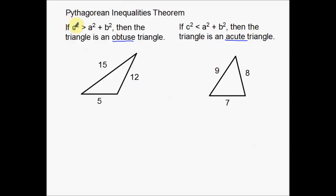Here we go. If c squared is larger than a squared plus b squared, then the triangle is an obtuse triangle. And on the other side here, if c squared is smaller, is less than a squared plus b squared, then the triangle is an acute triangle.